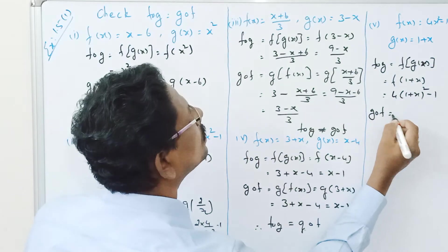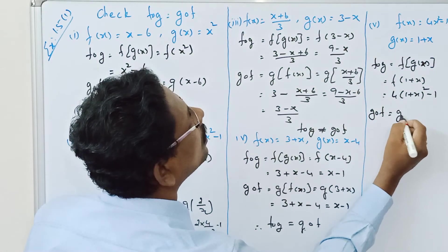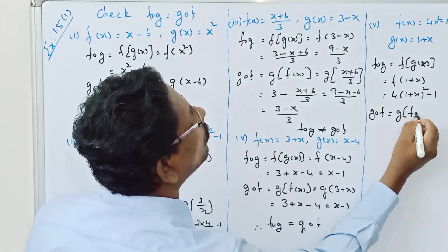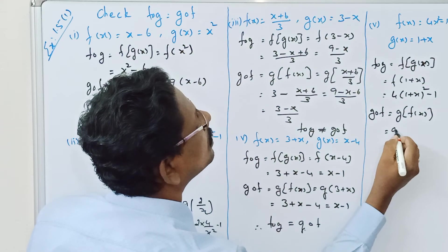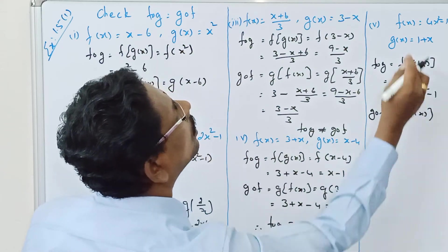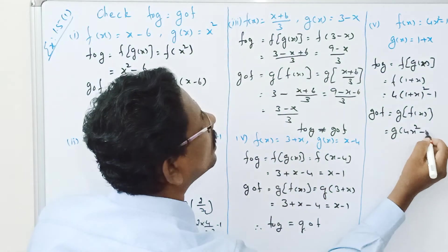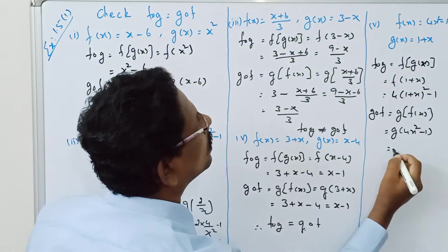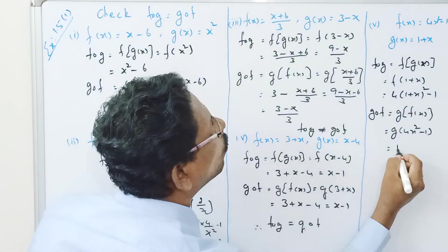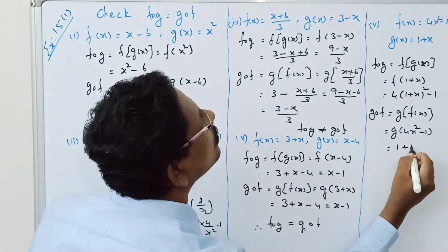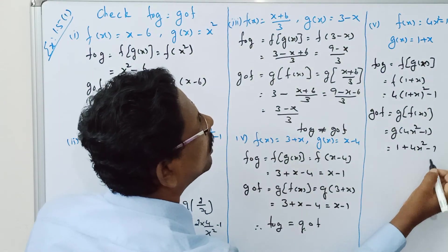Now G composition F — G of F of X — is equal to G of 4X squared minus 1. Applying G of X equals 1 plus X, that gives 1 plus 4X squared minus 1.